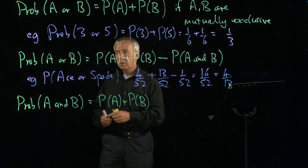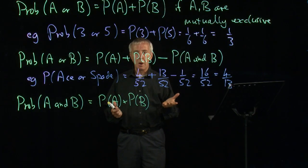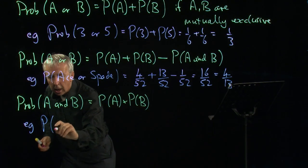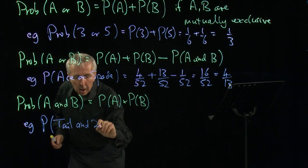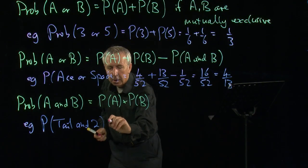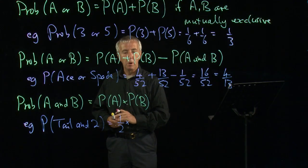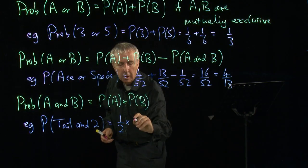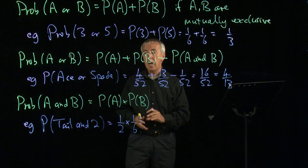And an example of this would be suppose I toss a coin and roll a dice. What's the probability of getting a tail and a two? Well, the chance of getting a two when I roll a dice is 1 out of 6, just like these probabilities up here. And so the chance overall of getting a tail and a two,